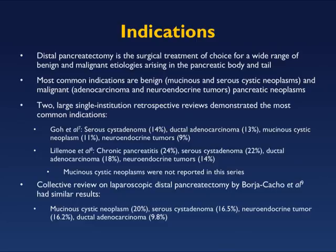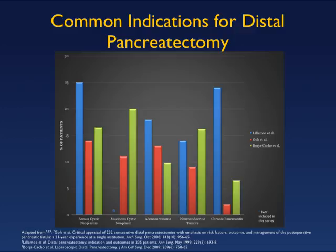Distal pancreatectomy is the surgical treatment of choice for a wide range of benign and malignant tumors. The malignancies I'm most concerned about are adenocarcinoma and neuroendocrine tumors. Mucinous cystic neoplasm is commonly located at the body-tail junction; serous cystadenoma is more common in the pancreatic head but can occur in the tail. Indications range from serous cystic tumors and mucinous tumors to adenocarcinoma, neuroendocrine tumors, and chronic pancreatitis.